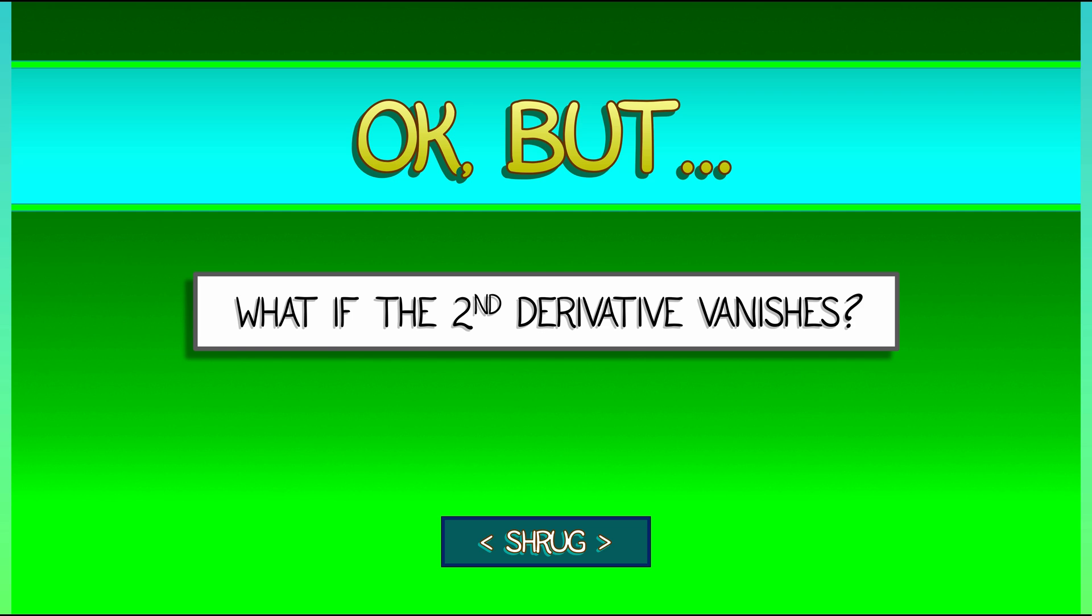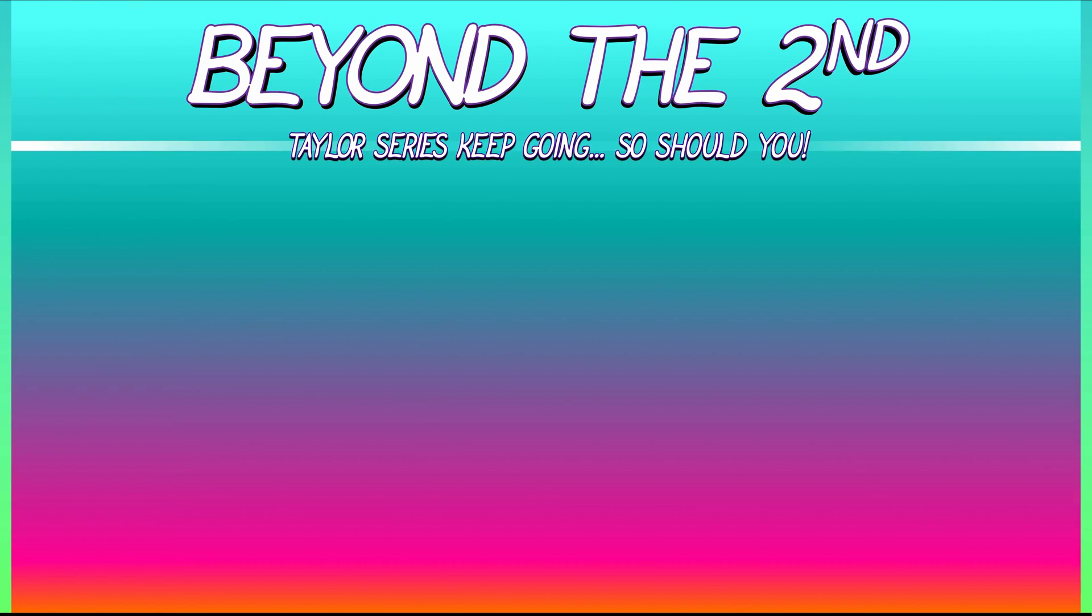In the past, you might have been taught that it's just a test, and if it fails, you don't know whether it's a max or a min, but we can do better than that. Since we understand that the second derivative test is really using information from the Taylor series, we can go beyond the second derivative.